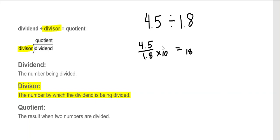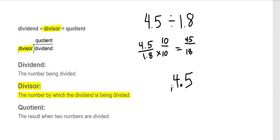If I multiply the bottom times 10, I have to also multiply the top times 10 to maintain that equivalency. So 4.5 times 10 is equal to 45. When we set up this problem, we're ultimately going to be dividing 18 into 45.